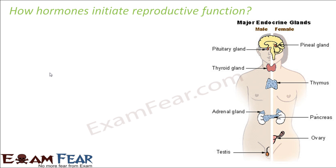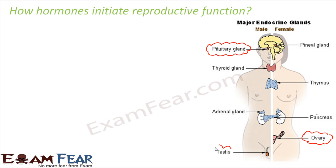The question is how these hormones initiate reproductive function. This picture shows all the important endocrine glands: the pituitary gland, which is the master gland; the pineal gland, also present in the brain; the thyroid gland, present just below the voice box; the thymus; adrenal; and pancreas. We also have the ovary on the female side and testis on the male side.